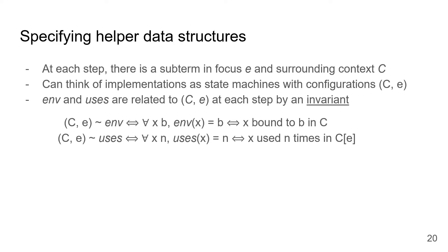Notice that, at each step in this example, there is a subterm in focus, which I rendered in black font, and a surrounding context, which I rendered in gray. We can think of an implementation of a program transformation as a state machine with configurations of this form, consisting of pairs containing surrounding contexts and subterms in focus. From this perspective, data structures like env and uses maintain invariants which relate their values to these machine configurations at each step. For example, the invariant on env is that every key value pair x, b corresponds to the variable name x being bound to boolean literal b in the surrounding context c. And the invariant on uses is that every key value pair x corresponds to the variable x being used n times in c applied to e, that is, the entire term being optimized.